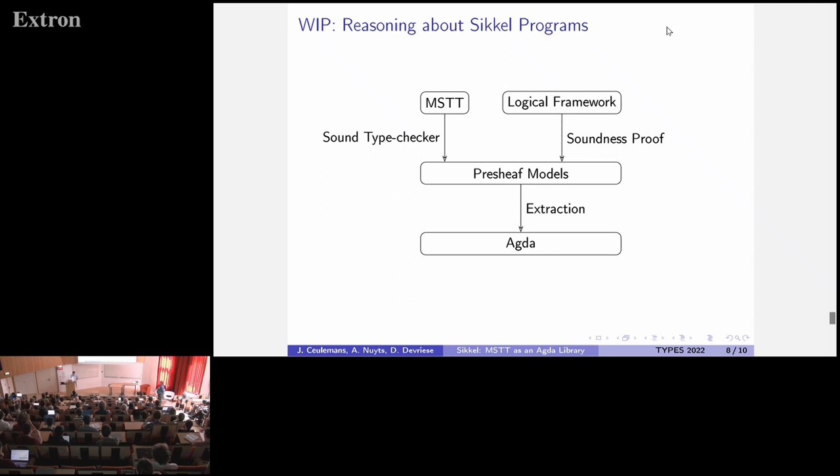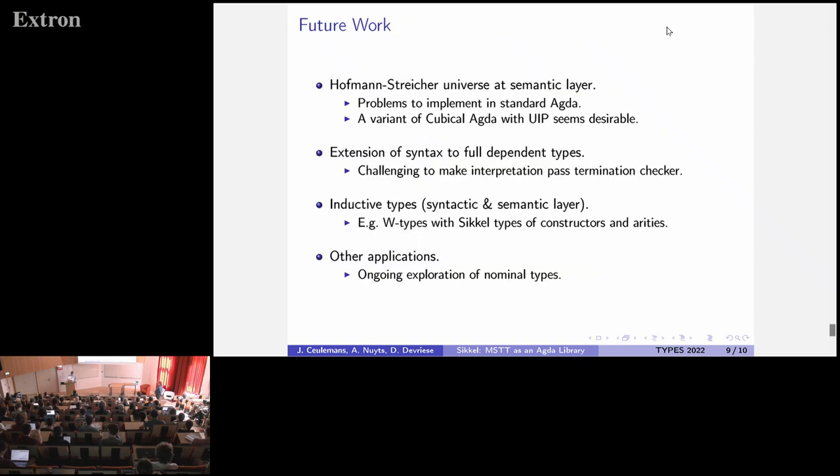Right, so what I'm currently working on is, well, not extending MSTT to dependent types, but adding a logical framework. So, there you get a way to write proofs about SICKL programs, and I need to mention that the presheaf models, so the semantic layer already do support dependent types, so we can write a soundness proof, and so the hope is that we can extract those, the interpretations of those proofs to get ordinary Agda proofs about the extracted SICKL programs. And so, very quickly, about future work, I hope to implement the Hofmann-Streicher universe at the semantic layer, but there are some problems in standard Agda which I hope to solve, if, well, which I think I could solve if there would be a variant of cubical Agda with the uniqueness of identity proofs. I also want to extend the syntactic layer to full dependent types, provide some support for inductive types, and study other applications.